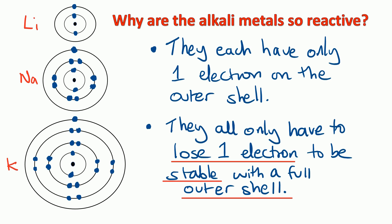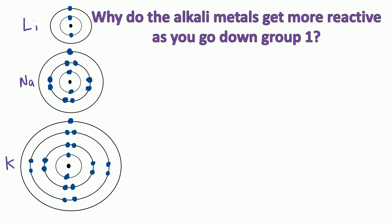That means they all only have to lose one electron to be stable with a full outer shell, and that's quite an easy thing to do — so that makes all the alkali metals in group 1 very reactive. When you sit your GCSE chemistry exam, expect to be asked: why do the alkali metals get more reactive as you go down group 1?